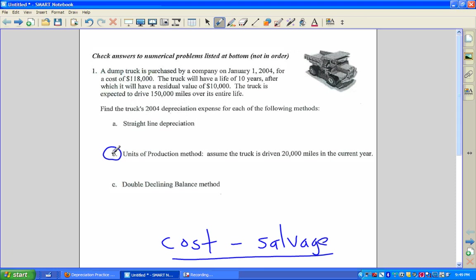Let's take a look at part B now. Units of production method. We'll do this one in red, but it's very similar.